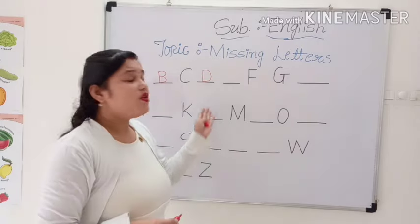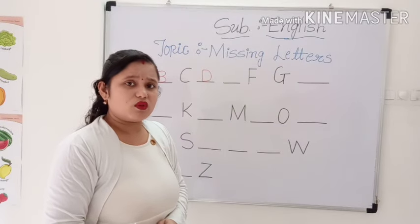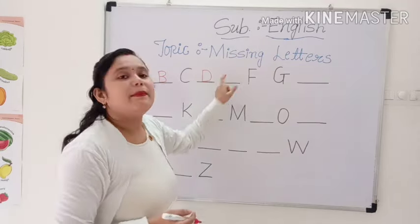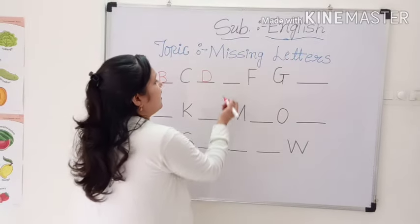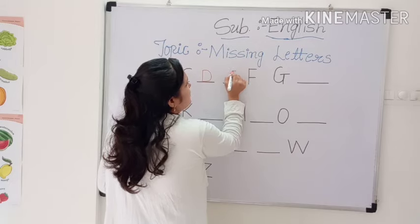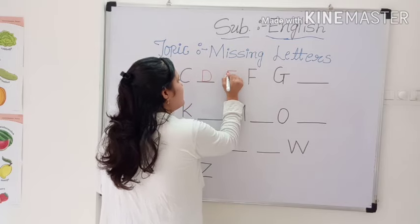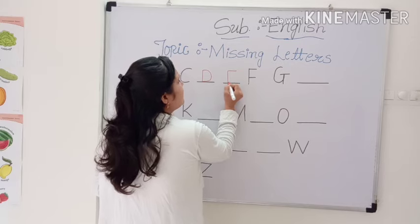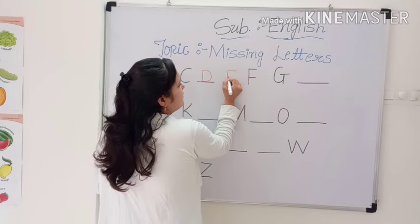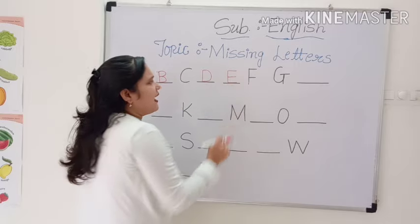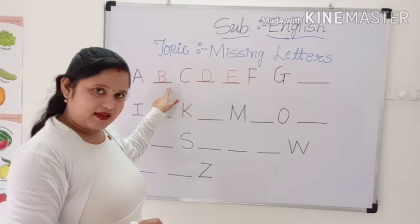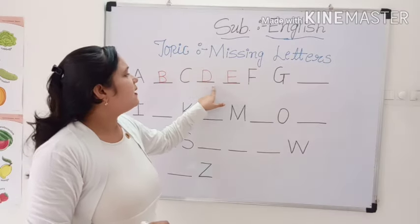Now, which letter comes after D? Do you know? Yes, very good. Capital letter E. And how can we write capital letter E? First, draw a sleeping line. Standing line. After that, draw another sleeping line. And go to the middle and draw a sleeping line. Capital letter E. A, B, C, D, E.